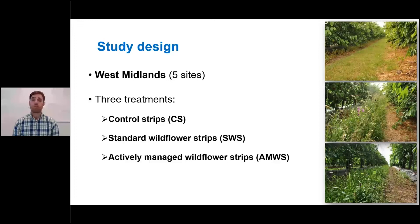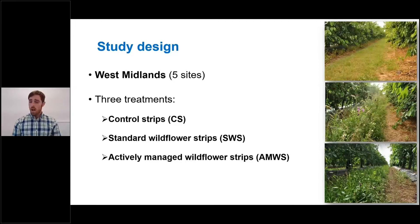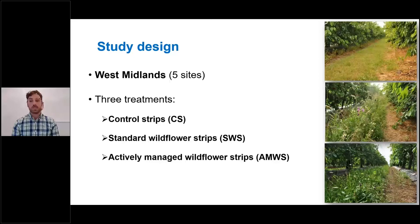This third treatment is a novel, grower-friendly strategy which tries to maximise benefits from pollination and pest regulation services while minimising inconvenience for growers. To promote wildflower establishment during the first year in 2017, all three alleyways were cut to 10 centimetres — so no differences between treatments were applied in year one. Treatments were applied after the cherry blossom periods in years two and three.